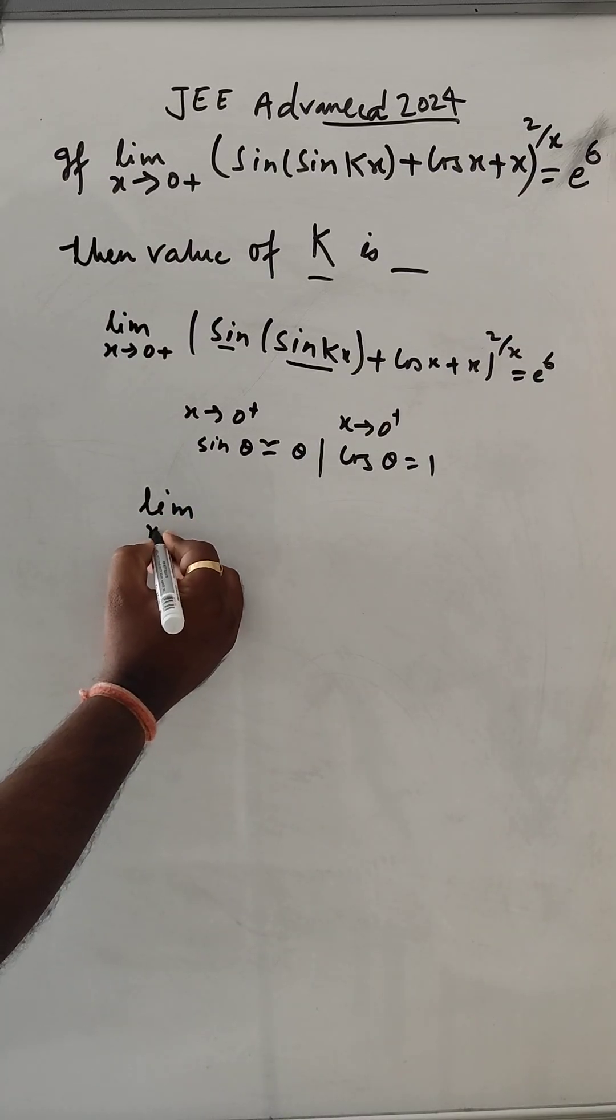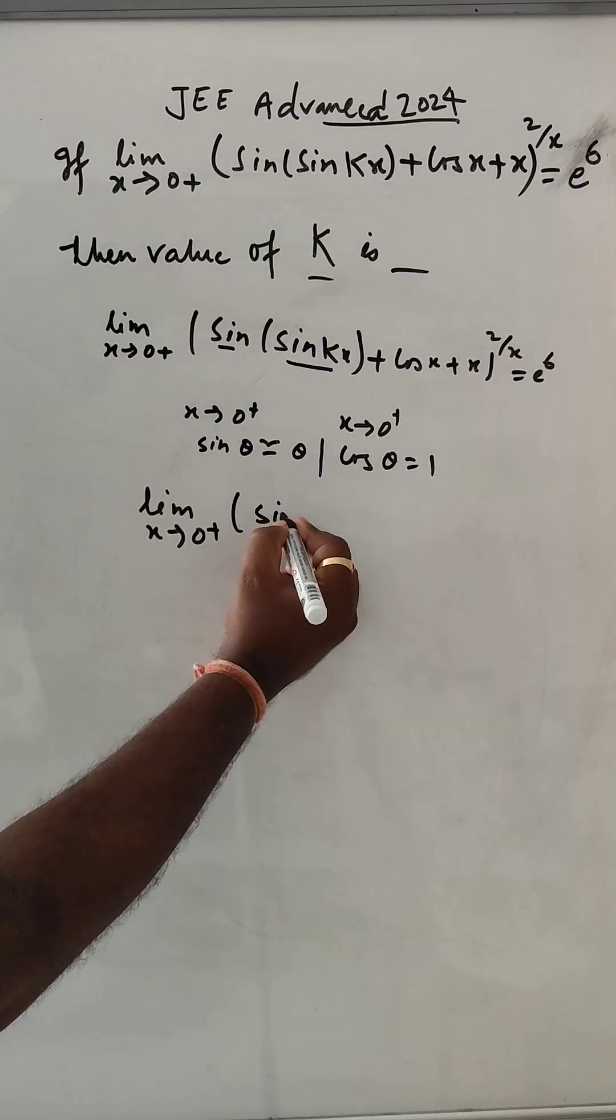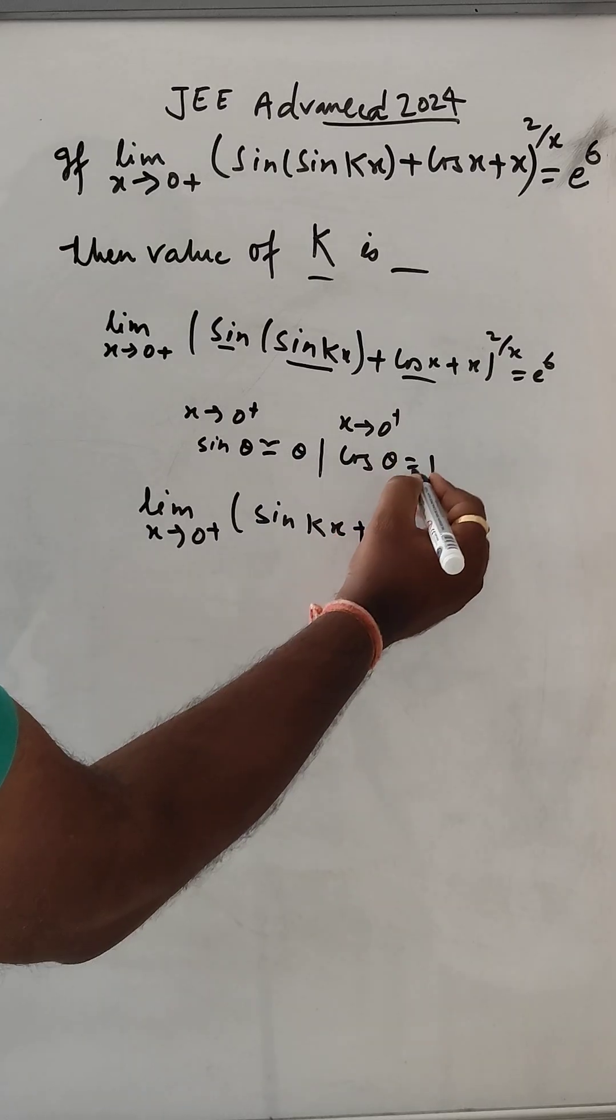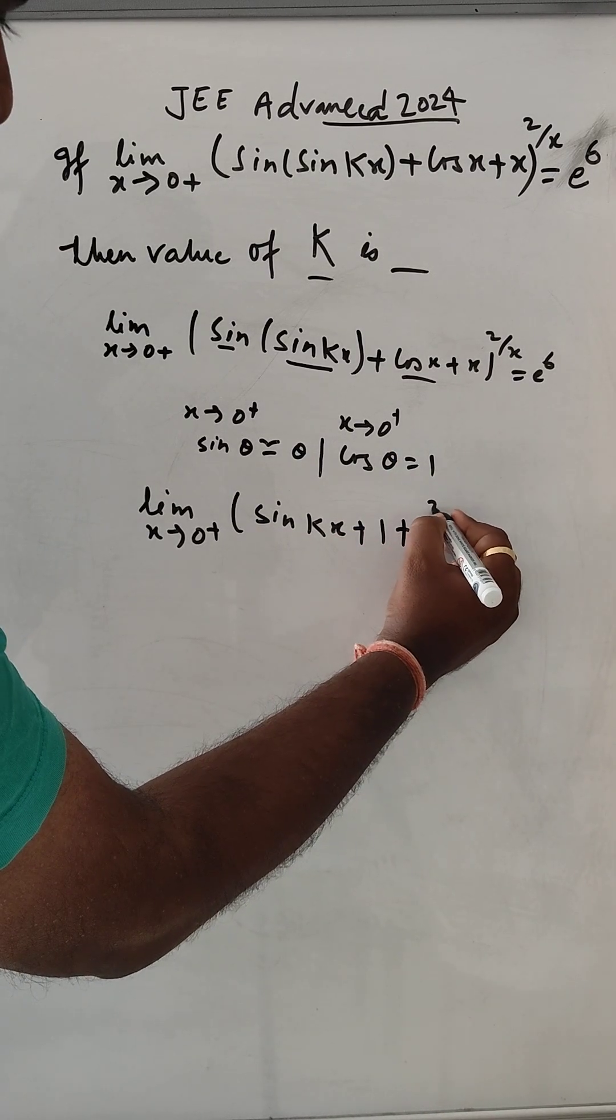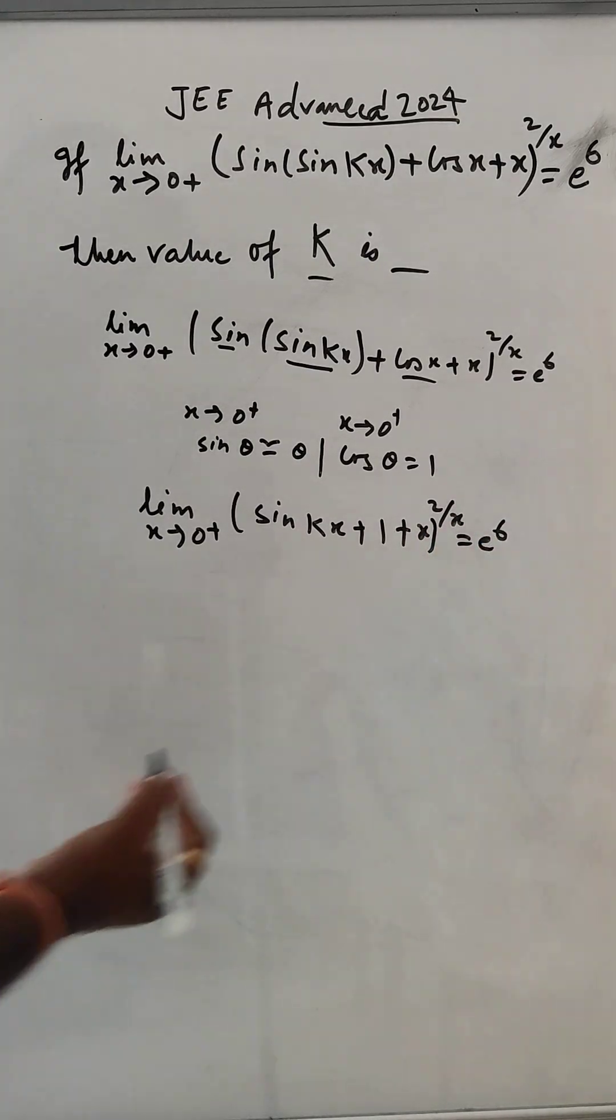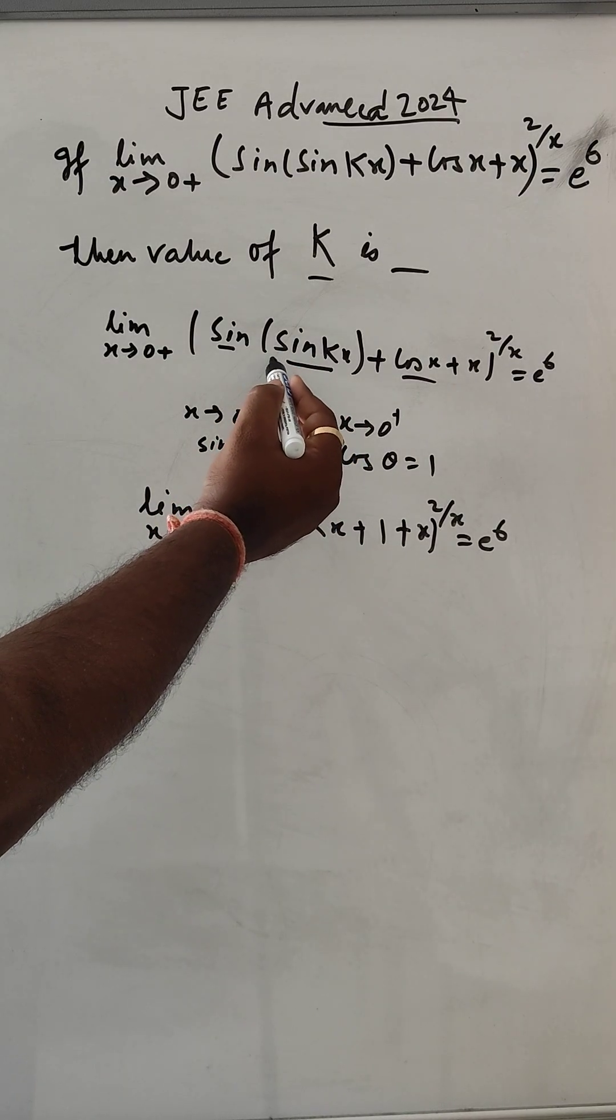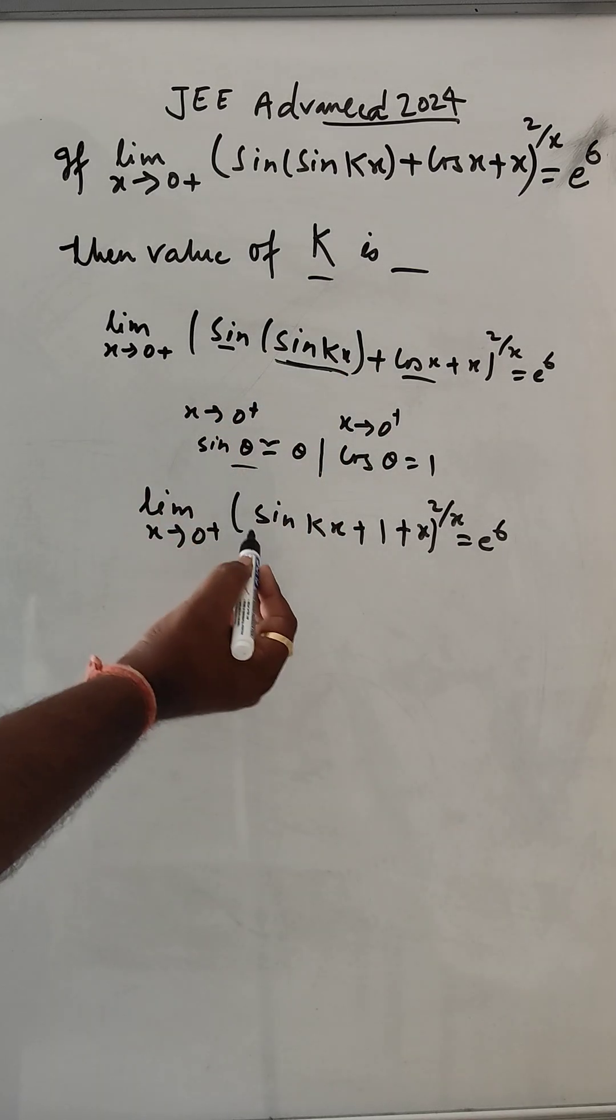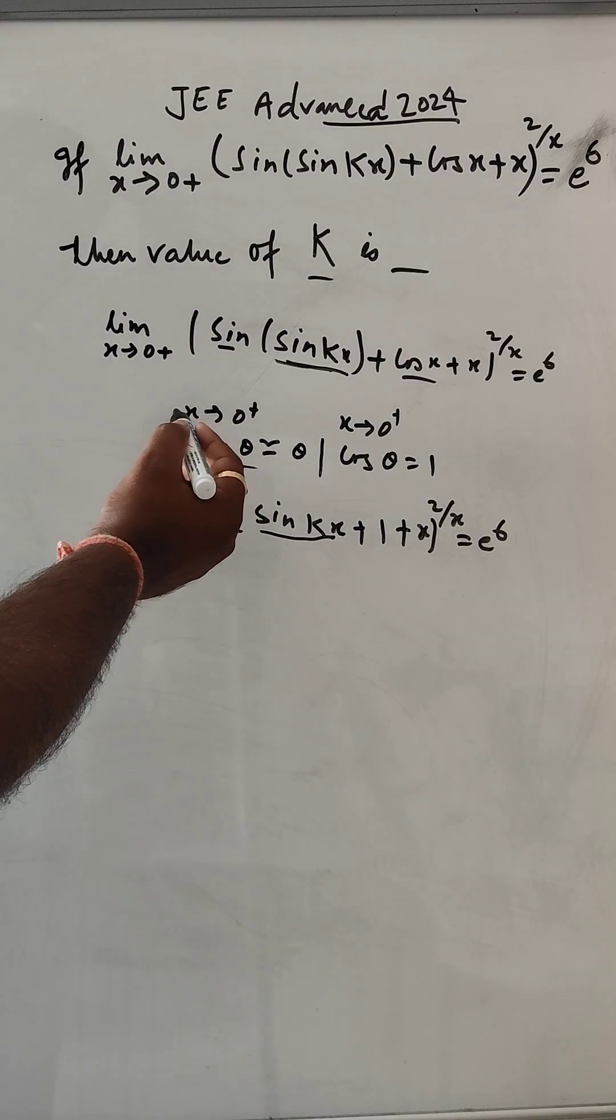We can write: limit x tends to 0 of [sin(kx) + 1 + x]/x to the power x equals e^6. According to this, we have kx, and for the next step we will also get kx because of this condition.